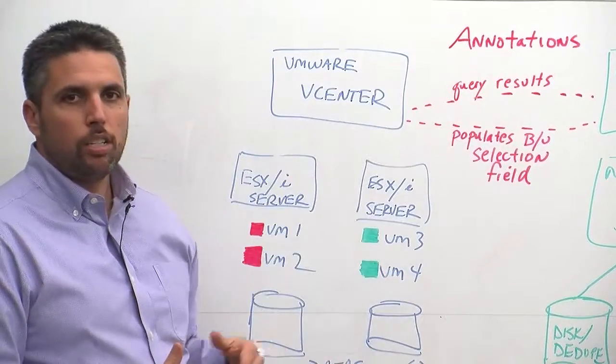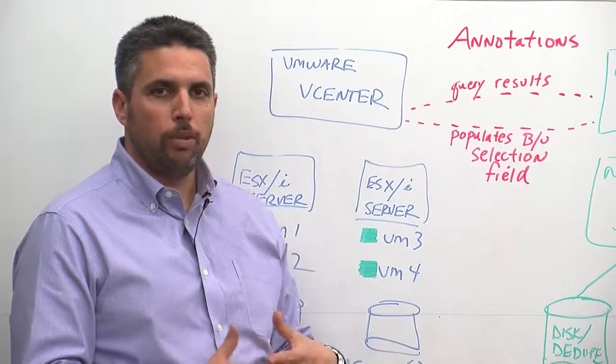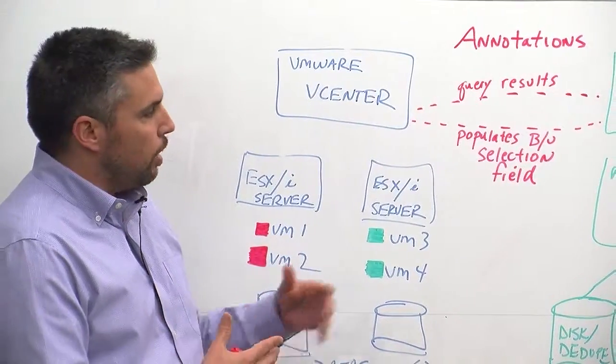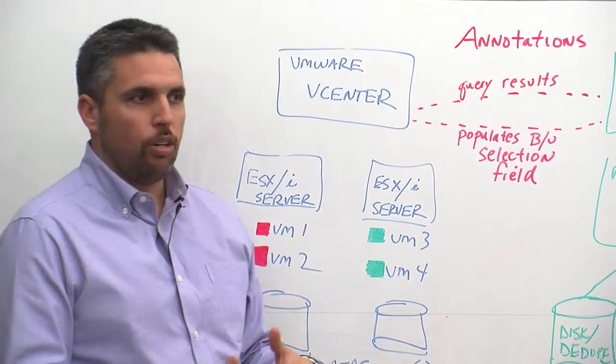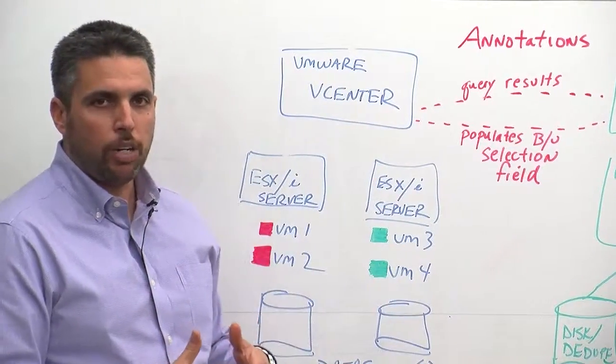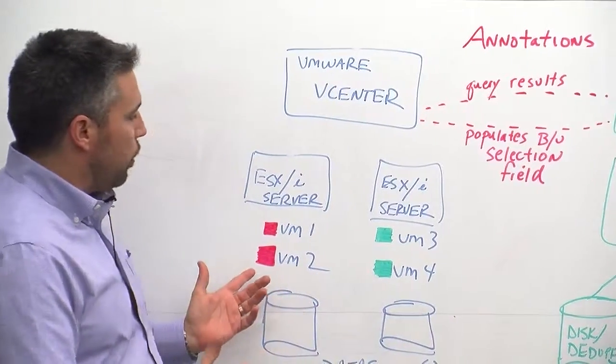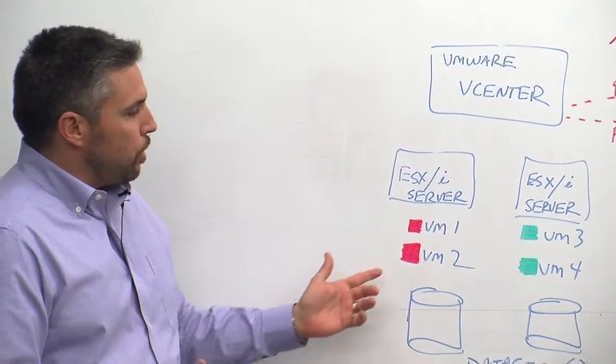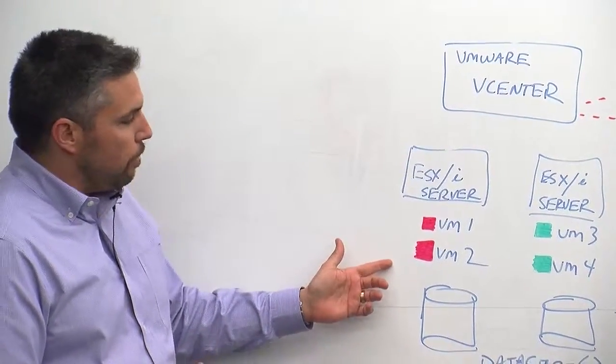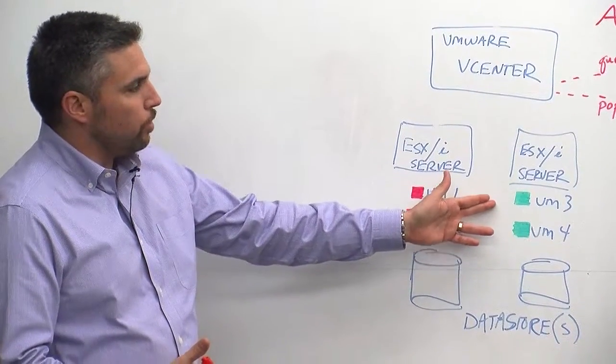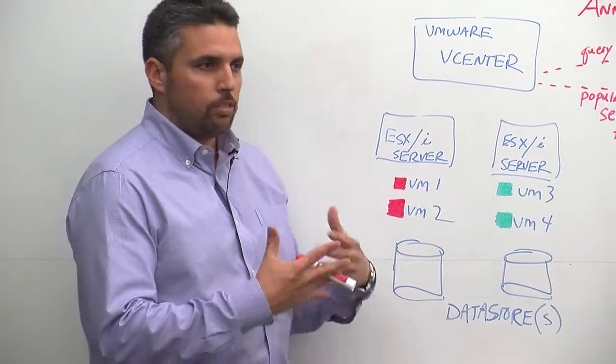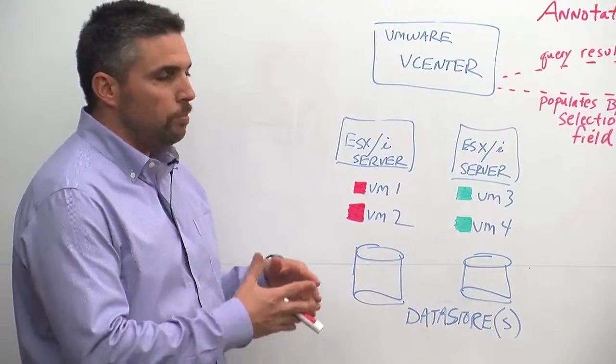And some of these annotations could be defined by host names, could be defined by display names, powered state. So if you wanted to, for example, define a query to show me the VMs that are powered off, in this case, virtual machine one and two are powered off, indicated by red, or powered on, virtual machines three and four. So you can have different queries, multiple queries.